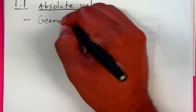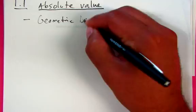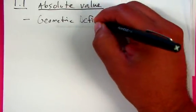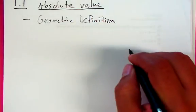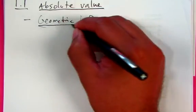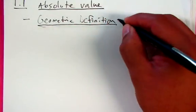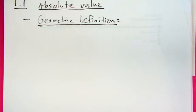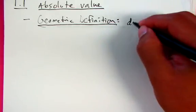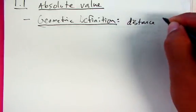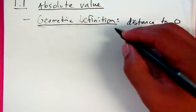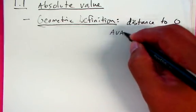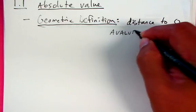There are two definitions. There's a geometric definition, which you're probably used to, and it's probably how you figure out absolute value of certain numbers fairly quickly. It's just the distance to zero on a number line, which means that absolute value will always be positive since distance is not a negative value.